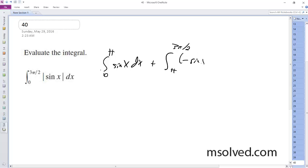Negative sine of x dx. So what we end up here with is negative cosine x from 0 to pi plus cosine of x from pi to 3 pi over 2.